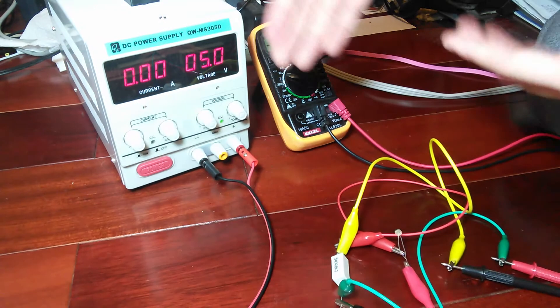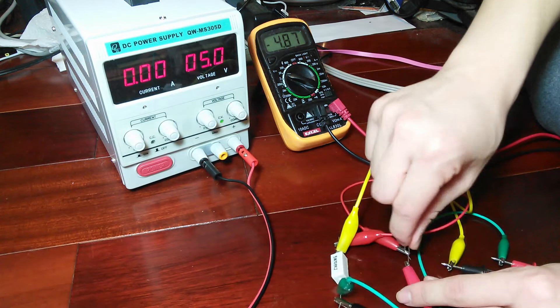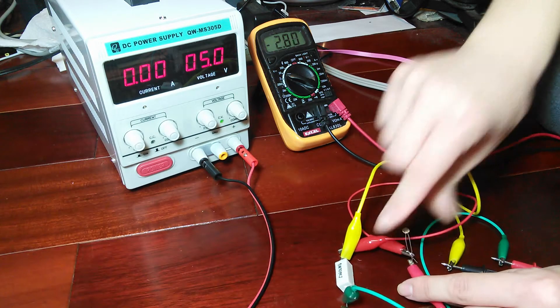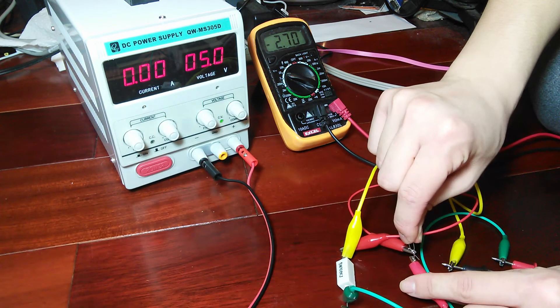So, essentially, this is a voltage divider because we're dividing the voltage between these two resistors, even though they're hooked up in series. It's kinda counterintuitive, I understand, but that's how it is.